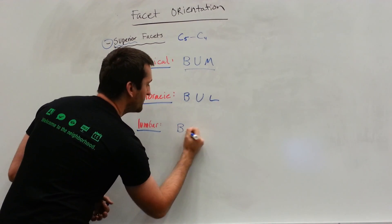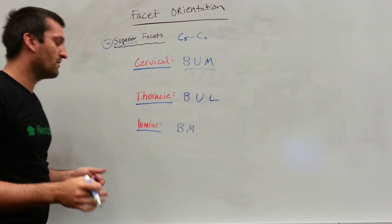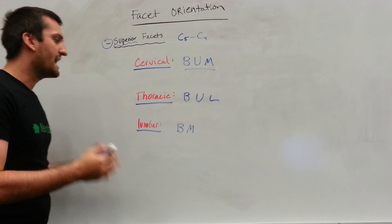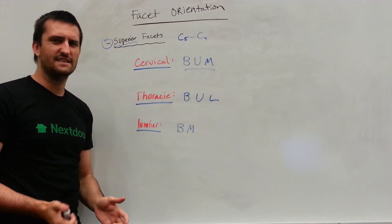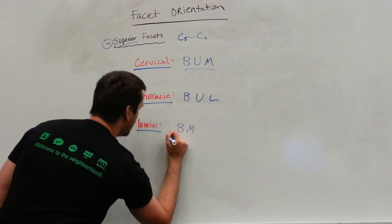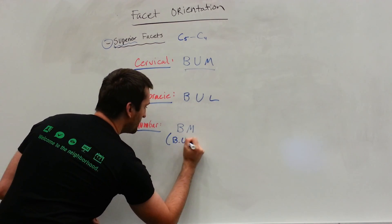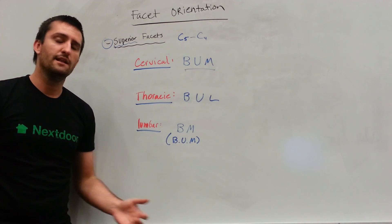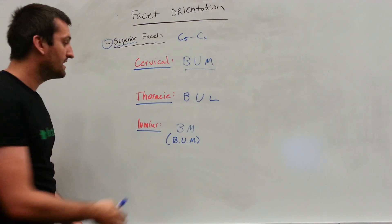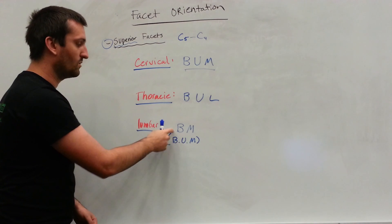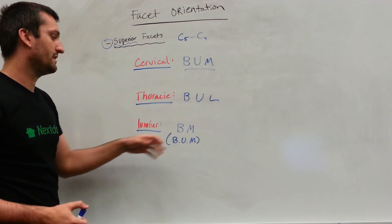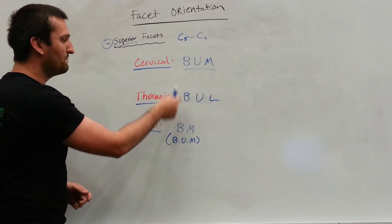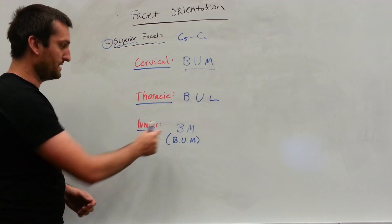And then the lumbar region primarily focuses backwards and medially. I have seen sources that say backwards, upwards, and medially. So in parentheses, I'm just going to write backwards, upwards, and medially, because depending on the institution that you're taught at, they will teach this one in different ways. But backwards, medially, or backwards, upwards, and medially. So put it all together: BUM, BUL, BUM, or BUM, BUL, BM.